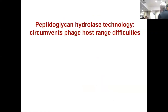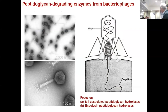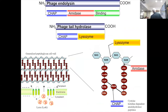That brings me to peptidoglycan hydrolase technology, which circumvents these problems with host range. The first thing I'll talk about is the endolysin. This is the lytic cycle: adsorption, replication, maturation, and release of progeny phage due to the action of the phage-encoded endolysin. It's not the only peptidoglycan hydrolase — there's also a tail-tip hydrolase, which facilitates entry of the phage DNA into the cytoplasm. The phage K endolysin has three domains: two enzymatic — a peptidase and an amidase — and a cell-binding domain. The tail-tip hydrolase has two enzymatic domains as well.